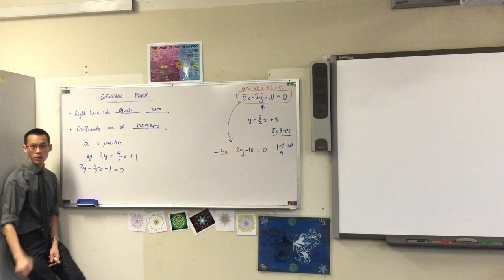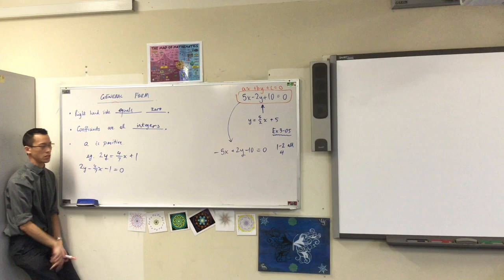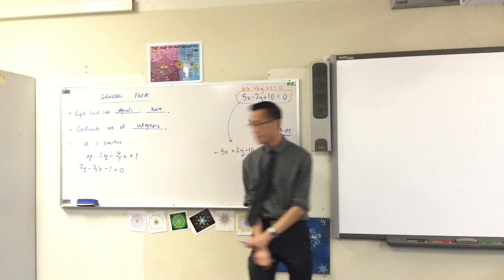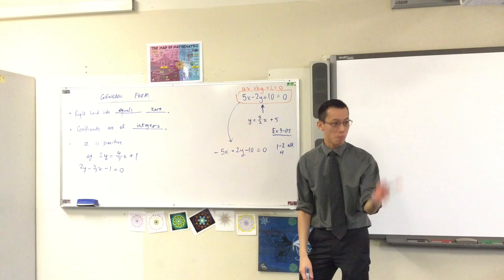But I'm not meeting the second one. Coefficients are all integers. Which one's the odd one out? Yeah, that guy there. Not an integer. So what do I do to this to change it? If I want it to be an integer, and right now it isn't, to get rid of a fraction, I will multiply through by something. The denominator is 7, so I'll multiply everything by 7.